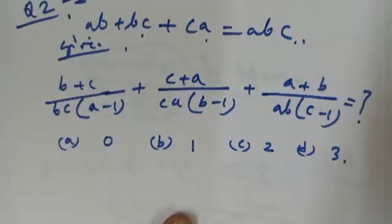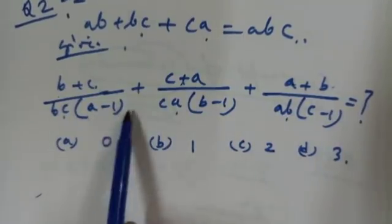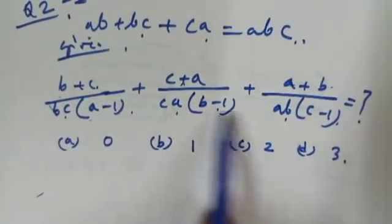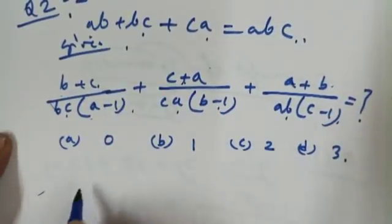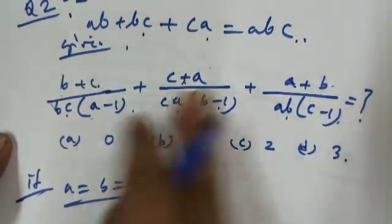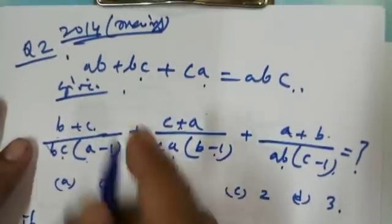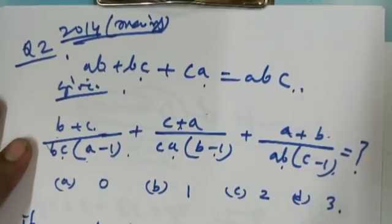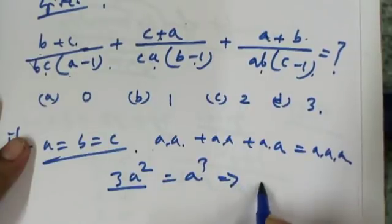Observe this expression carefully — it is also symmetric. The structure B+C, C+A, A+B over BC, CA, AB with A−1, B−1, C−1 is the same type throughout — that is symmetry. So we put A = B = C. Then 3A² = A³, giving A = 3.